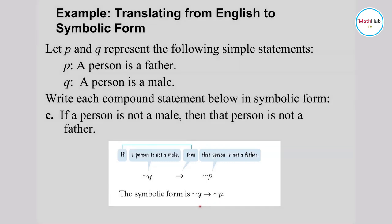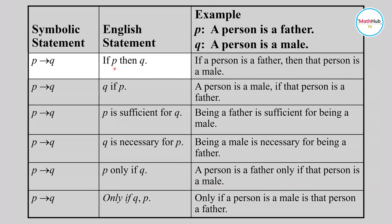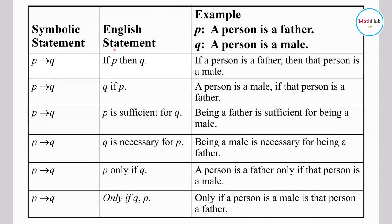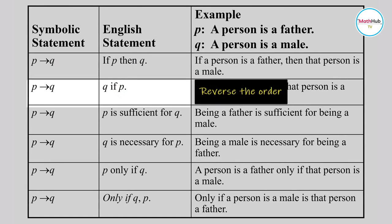In this topic, you will be asked to write the symbolic form of English statements, so it is important to take note of the different forms for p → q. The most common is 'if p then q,' which is written symbolically as p → q. You could also have 'q if p' — take note that the statement that comes after the word 'if' is your antecedent, so 'q if p' is still written as p → q.